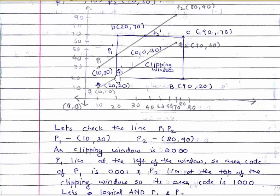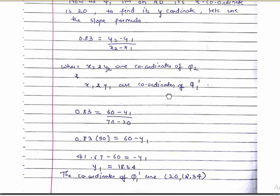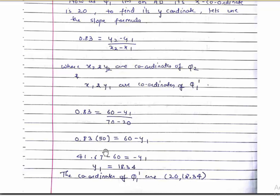Using the slope formula again with the known slope of 0.83 and knowing the x-coordinate of Q1' is 20 (on the left boundary): 0.83 = (60 - y1) / (70 - 20), so 0.83 × 50 = 60 - y1, giving y1 = 18.43. Therefore the coordinates of Q1' are (20, 18.43). This is how we perform the Cohen-Sutherland line clipping operation.